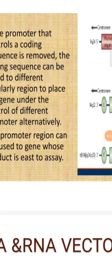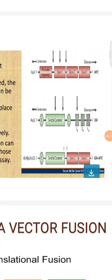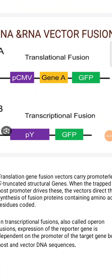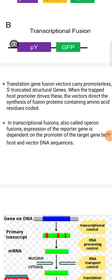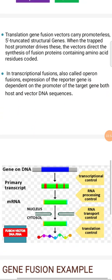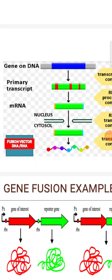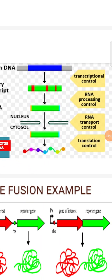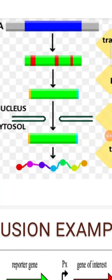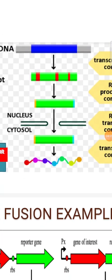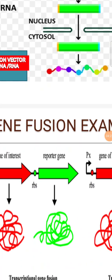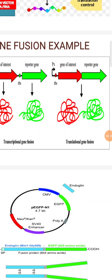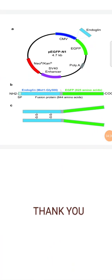If the promoter that controls a coding sequence is removed, the coding sequence is fused to a different region — this promoter is used in the fusion vector. The DNA vector and RNA vector are processed by translational fusion and transcriptional fusion. Translational gene fusion is carried out at the 5' end, and transcriptional fusion at the 3' end of the DNA. As seen in the diagram, the gene on DNA is primarily transcribed, with RNA processing in the nucleus and translation control in the cytosol, showing different gene fusion types.